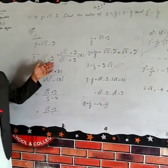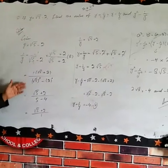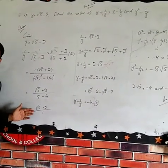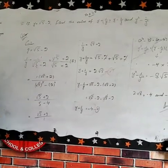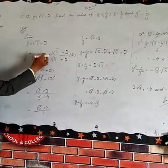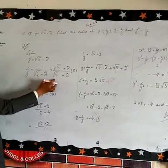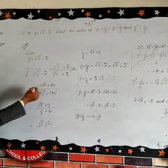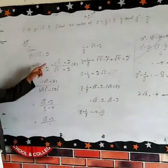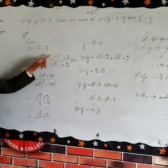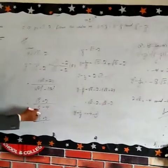We can multiply by the conjugate. √5 + 2 divided by √5 + 2. Then (√5)² - (2)² equals 5 - 4, which equals 1. So √5 + 2 divided by 1 equals √5 + 2.